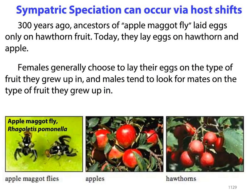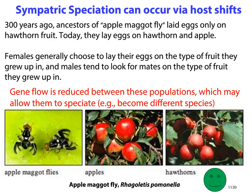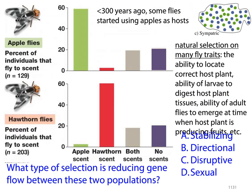A great example of sympatric speciation via host shift are the apple maggot flies. About 300 years ago, only hawthorn trees existed in North America, so these flies only laid their eggs on hawthorn fruit. When apples were eventually introduced, they were able to lay eggs on both hawthorns and apples. Females generally chose to lay their eggs on the type of fruit they grew up in, and males tended to look for mates on the same type of fruit. Eventually this led to separation of the two species — gene flow was reduced between the populations, allowing them to speciate.